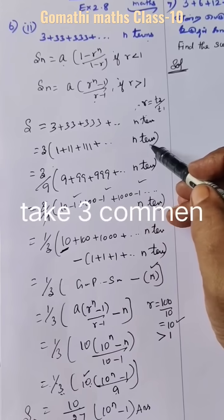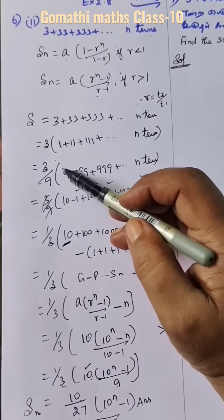This is 3 times 1 plus 11 plus 111 etc. n terms. Multiply and divide by 9.